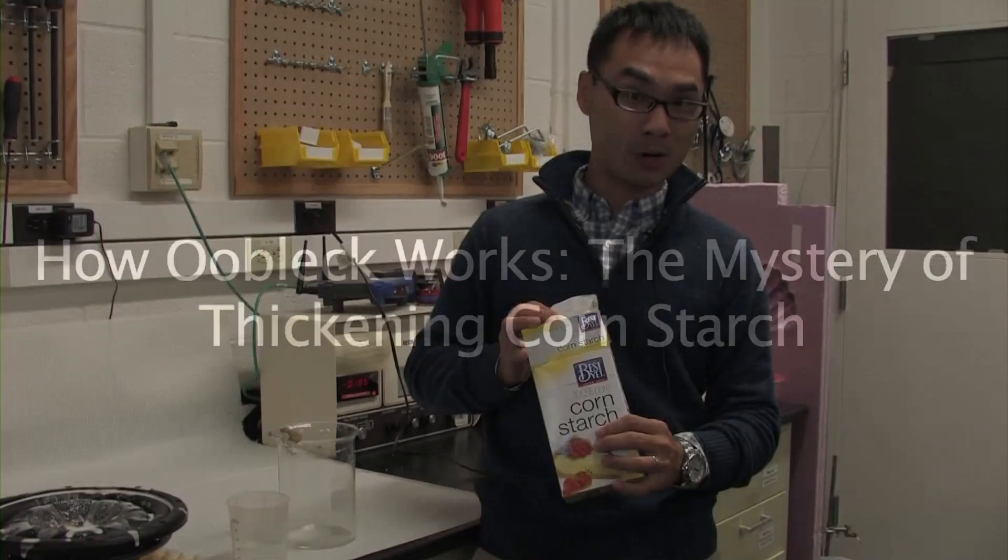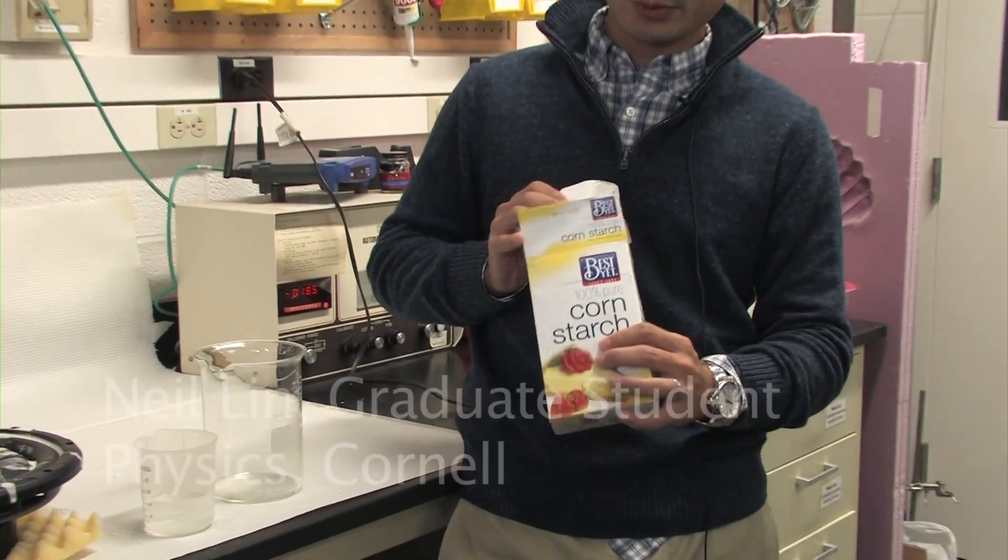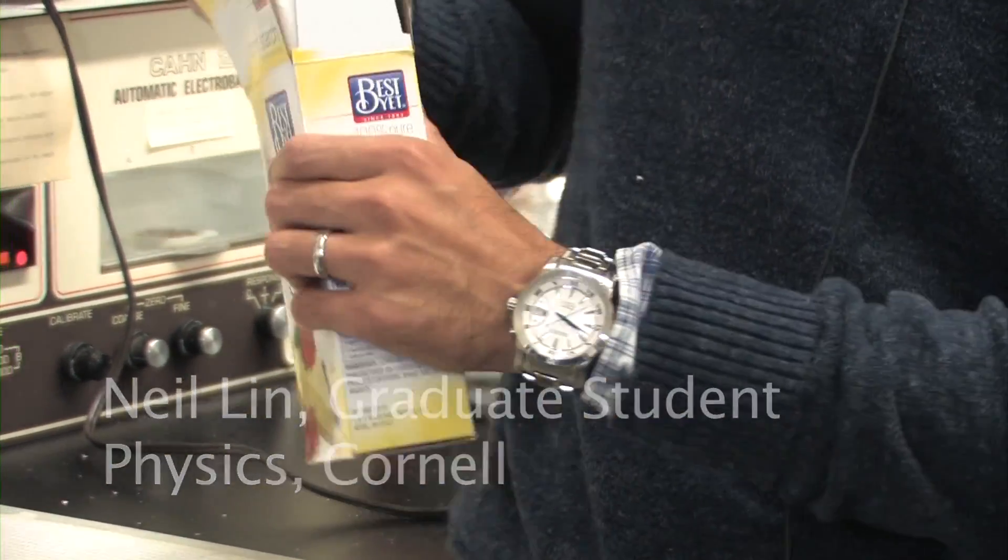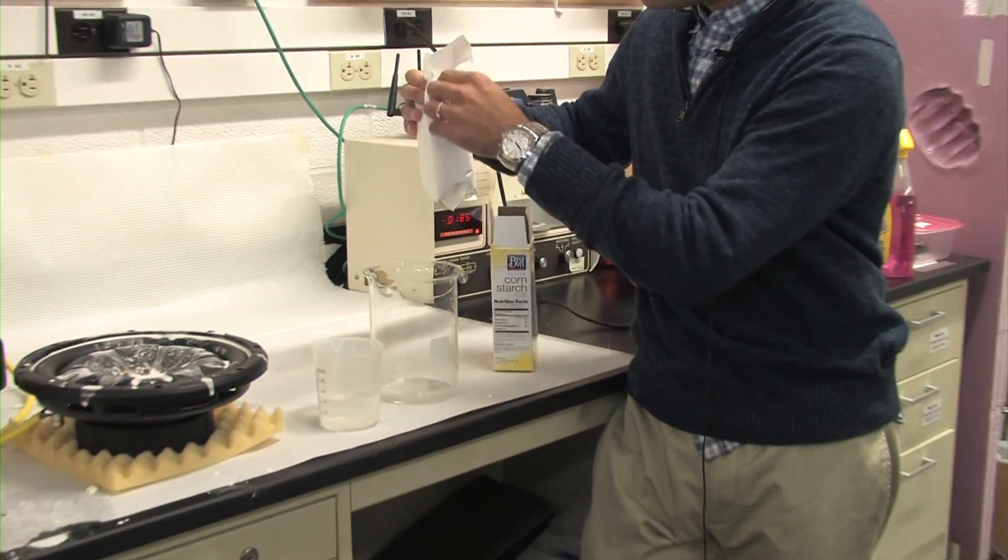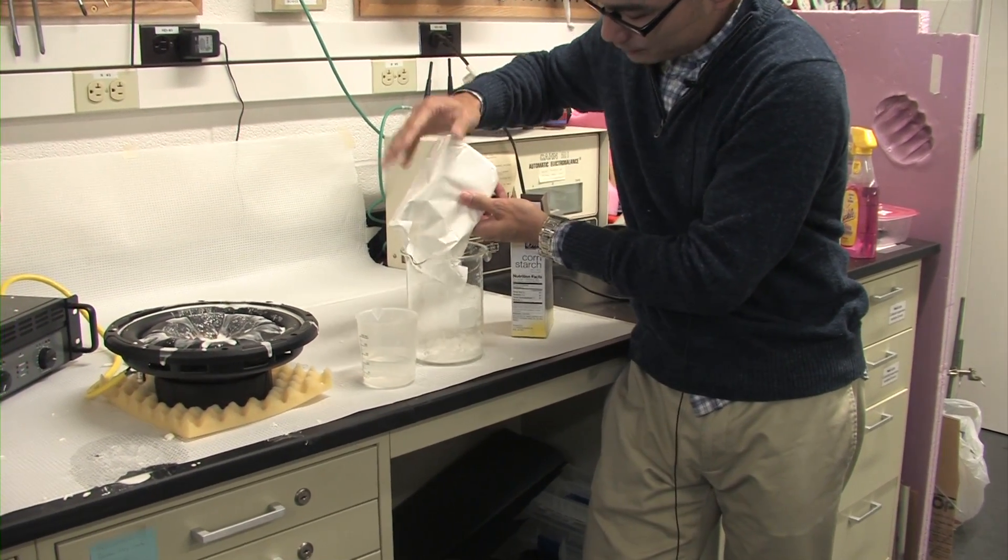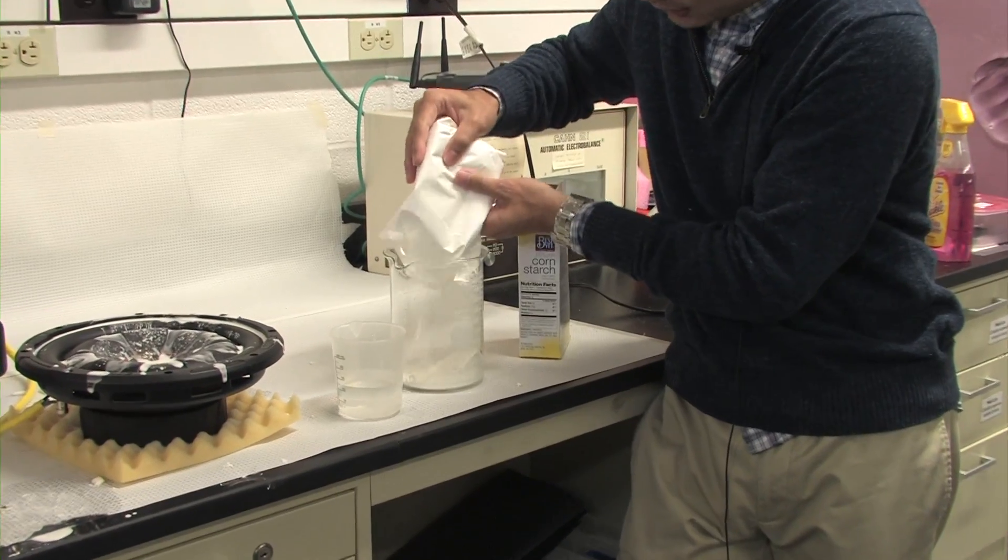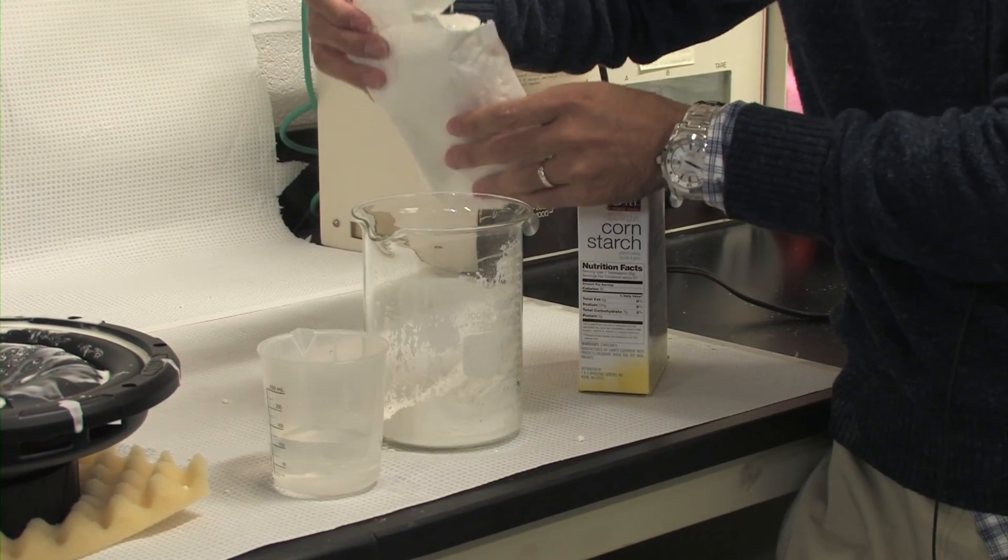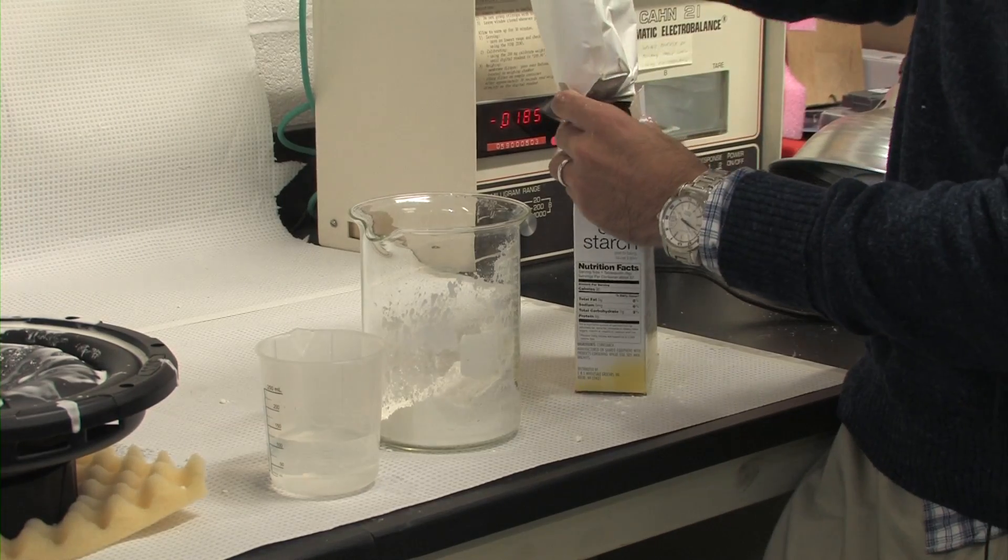So now we're going to do a simple experiment. Here's a simple experiment. We have a bag of cornstarch and I'm going to mix this with water. And this is something you can get in your kitchen. So I'm going to pour in some cornstarch in the beaker, a lot of cornstarch. Then I'm going to add a little bit of water into the same beaker.